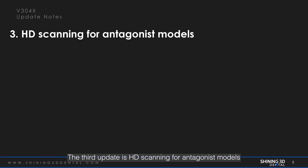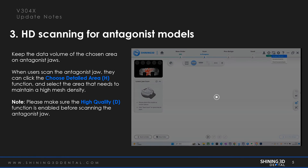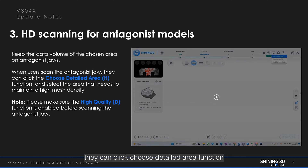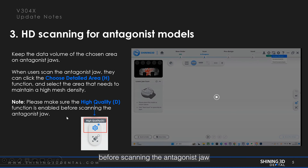The third update is HD scanning for antagonist models. We can keep the data volume of the chosen area on antagonist arches. When users scan the antagonist arch, they can click the choose detailed area function and select the area that needs to maintain a high mesh density. Please make sure the high quality function is enabled before scanning the antagonist arch.